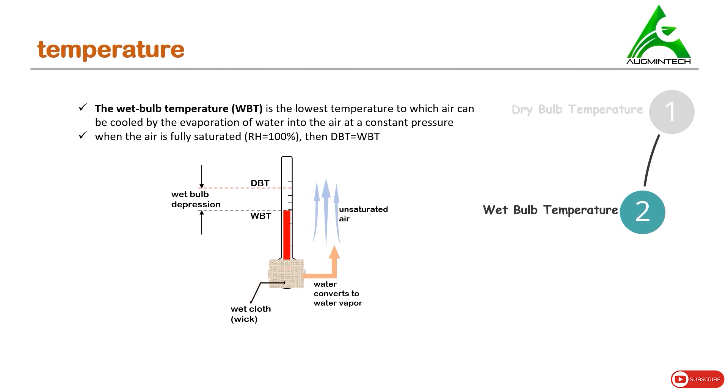When the air is fully saturated, that means relative humidity is 100%, then dry bulb temperature equals to wet bulb temperature. As already mentioned, if the saturated air flows through this thermometer, then the water from the wick does not convert to water vapor, and hence the mercury in the thermometer does not fall. This gives us the reading of wet bulb temperature and dry bulb temperature to be same.